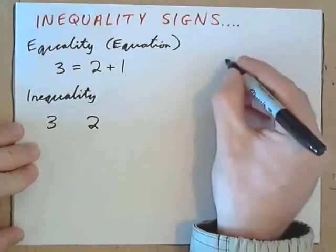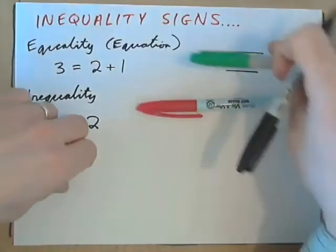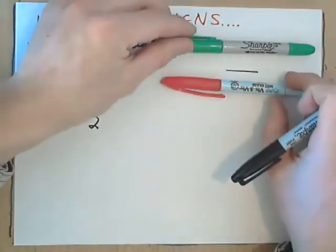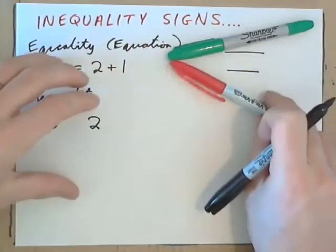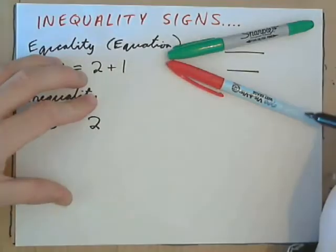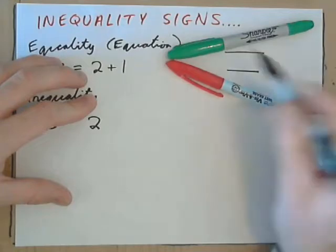Well, an equal sign looks like that. Two lines parallel, just like that. If you take those two lines and tilt them like this, what you get is a point and a gap. Which is bigger, a gap or a point? Well, a gap is bigger, isn't it? And the point is smaller.